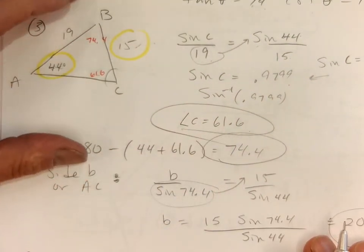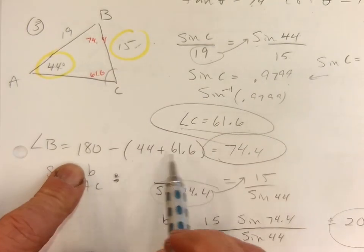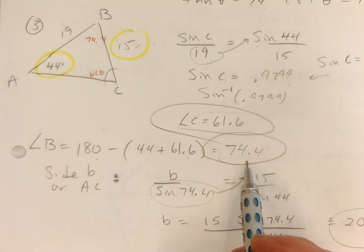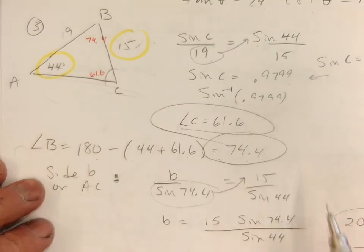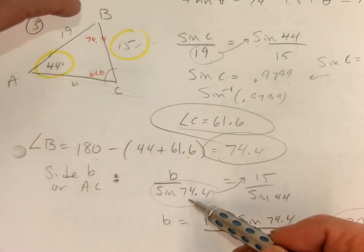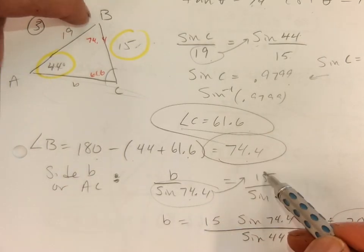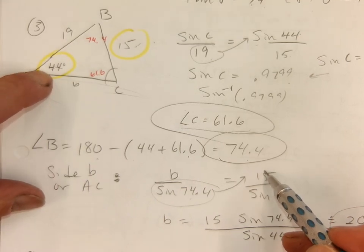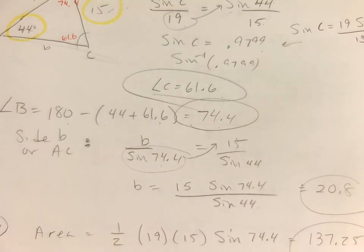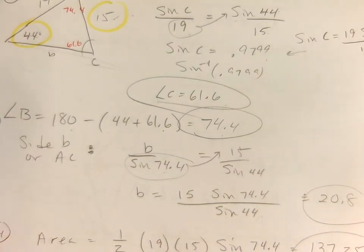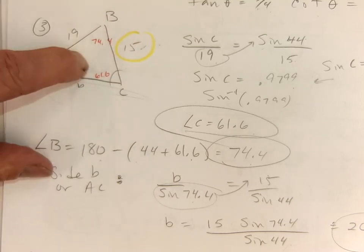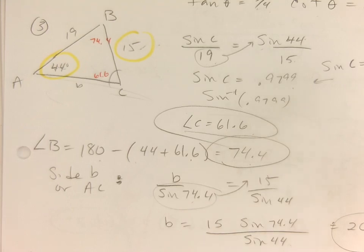Then I needed to find the third angle, angle B. Knowing there are 180 degrees in a triangle, I added the two known angles and subtracted from 180, getting 74.4 degrees. Finally, for side AC (little b), I set up opposites: b over sine of 74.4 equals 15 over sine of 44. I multiplied up and got about 20.8. The area is 1 half times adjacent times adjacent times the sine of the angle — I got about 137.25.